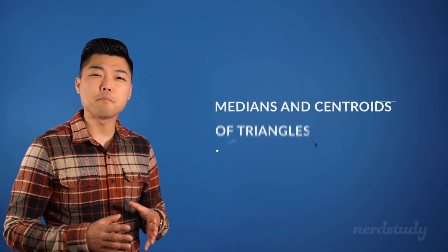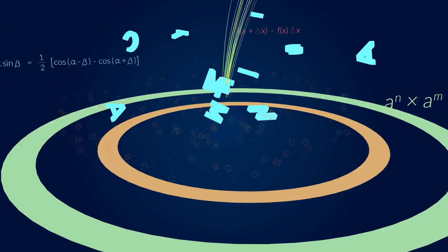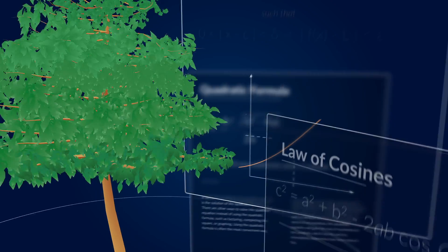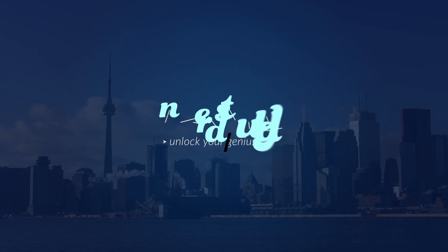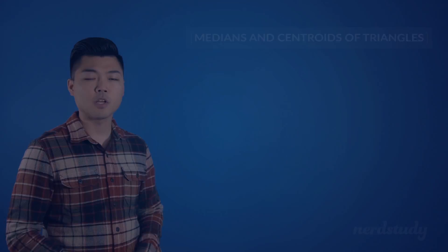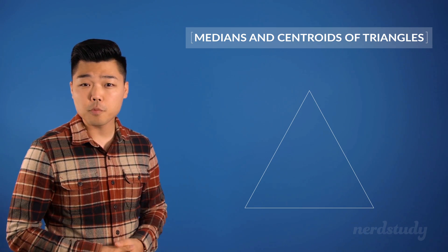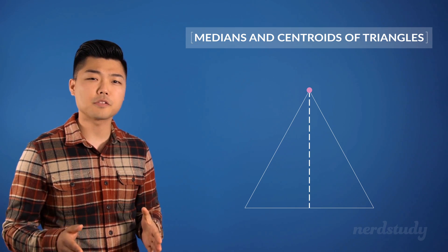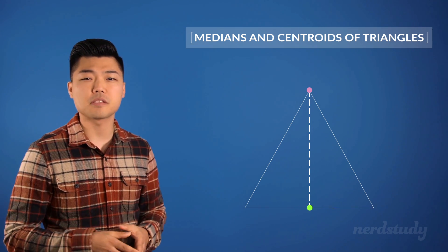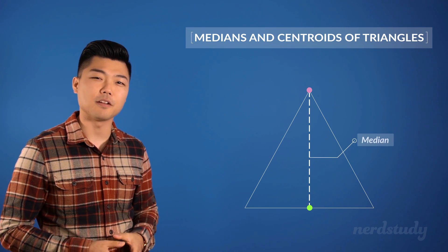Today we're going to be talking about the median and centroid of a triangle. Here is a triangle. If you take any one of the three points on a triangle and draw a line to the midpoint of the opposite side, then you have drawn what is called a median.